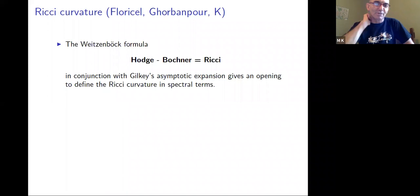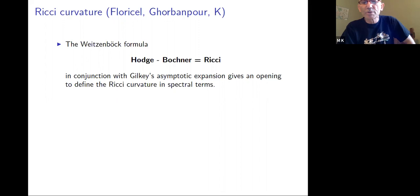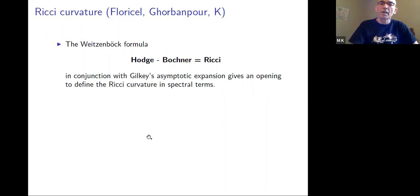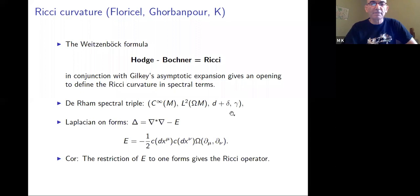Using Gilkey's asymptotic expansion formulas, you can have a proposal for Ricci curvature, provided you are willing to work with the Laplacian on one-forms. So far we worked with Laplacians on scalars, but if you work with the Laplacian on one-forms, you can have a definition of Ricci in the noncommutative case, for tori — noncommutative tori.